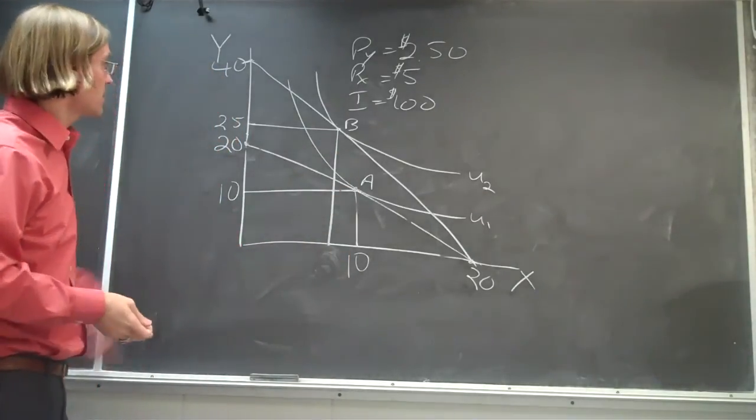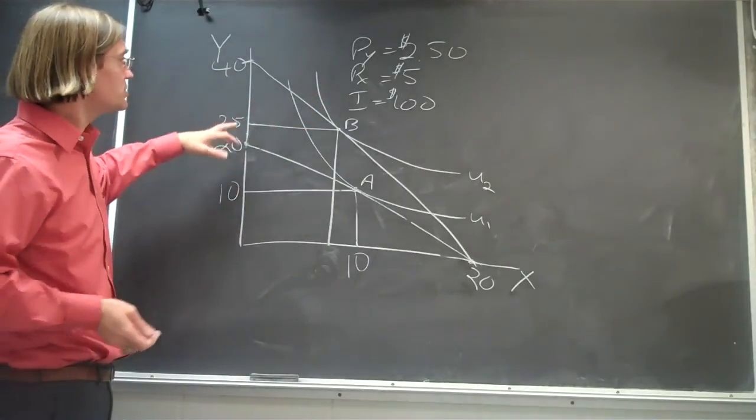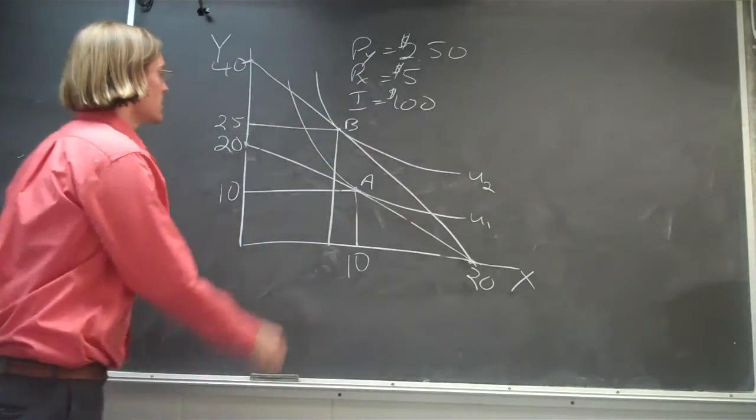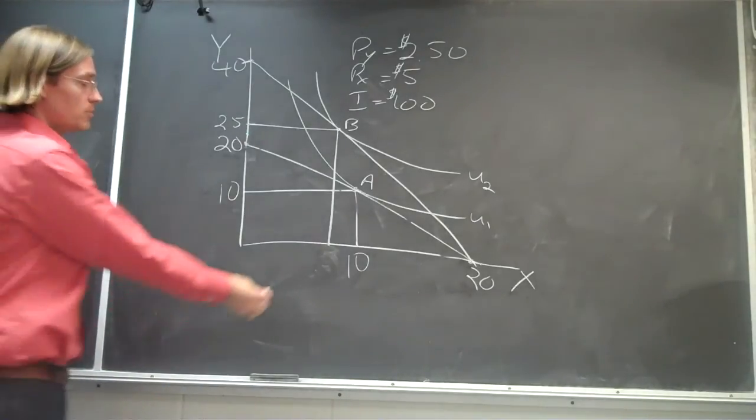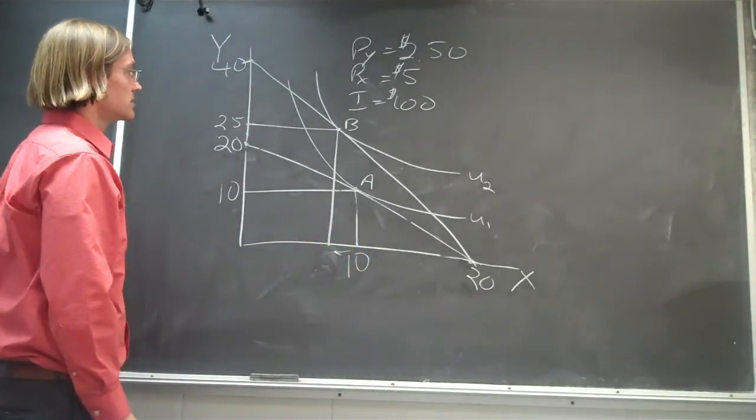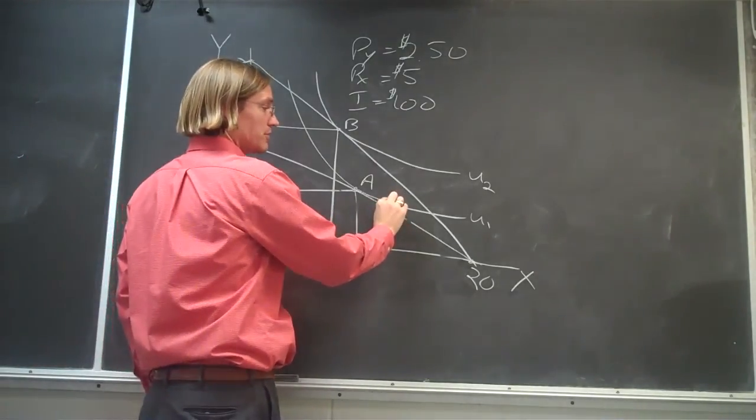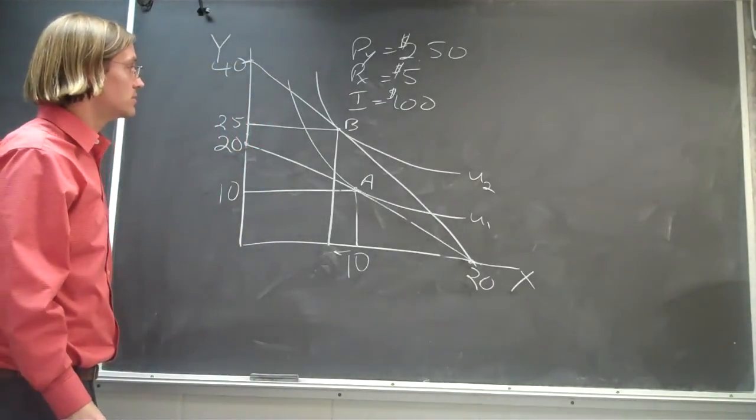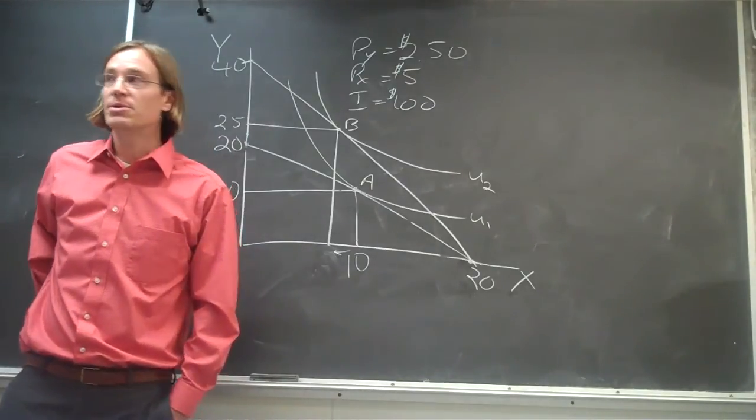I don't want to do that giant math, but you can figure out now, based on their budget constraint, if this was the new indifference curve and they were now consuming 25 units of Y, they would be consuming some lesser units of good X. But they would be better off because they would have moved from this indifference curve U1 to indifference curve U2, making the consumer pretty fired up that the good Y is cheaper now.